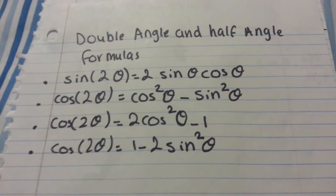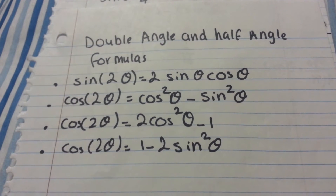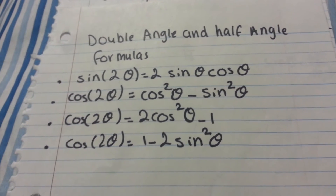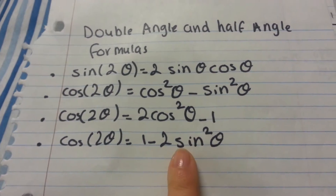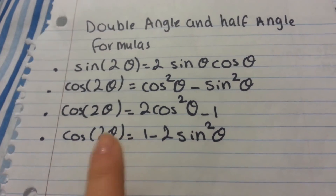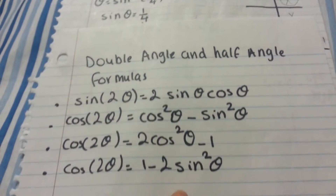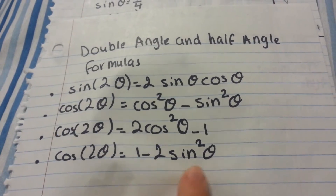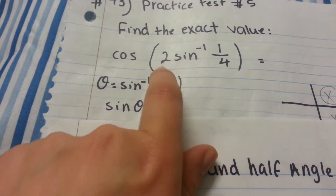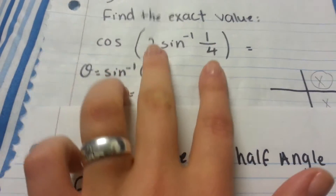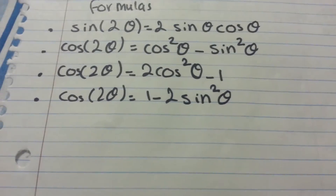Now look at the double angle and half angle formulas and find which one matches. The best choice is the last one: cosine 2 theta equals 1 minus 2 sine squared theta, because we have cosine and 2 sine squared theta — this is the one that matches, so we'll use that one.